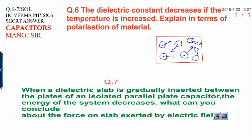First, Question 6: The dielectric constant decreases if the temperature is increased. Explain in terms of polarization of material. When you deal with polarization, what happens when you apply an electric field?